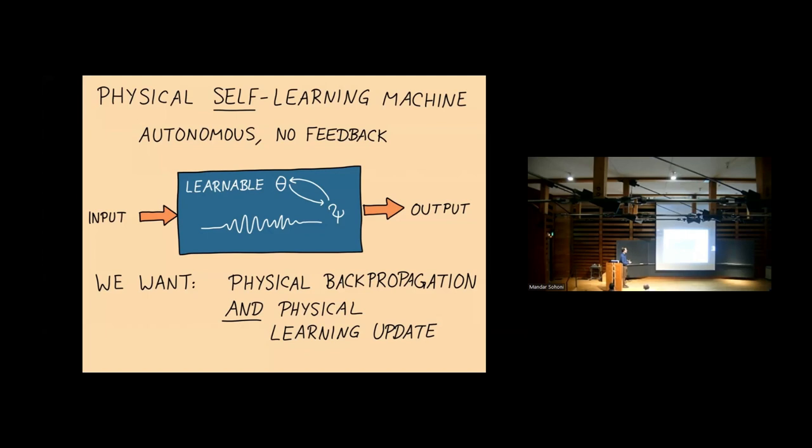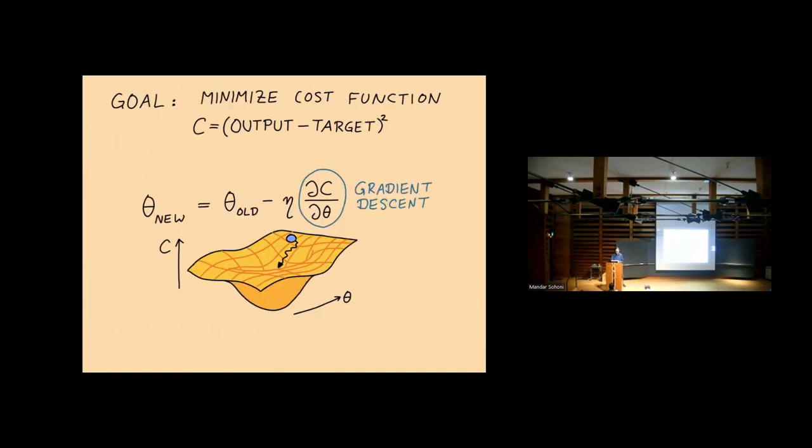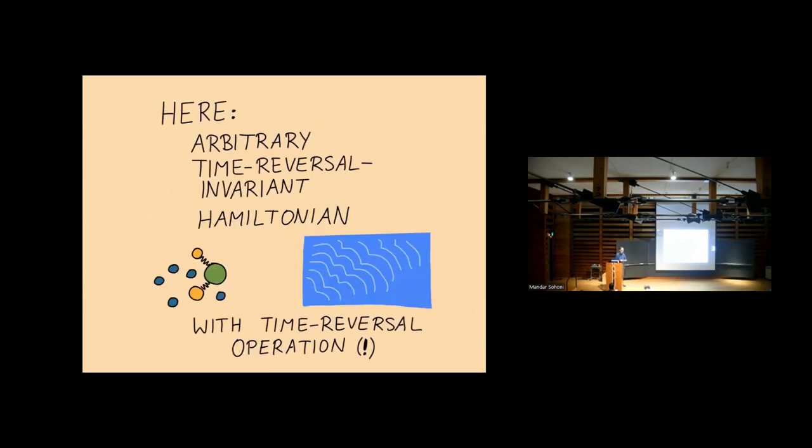That brings us to the question I want to answer in the following, namely, can we have an equally general way of doing physical backpropagation and at the same time also produce physical updates of the trainable parameters in a purely physical way, so by the physical dynamics of the system? So that's the question we set out to answer. We have our black box physical system, degrees of freedom that have their own dynamics, theta and psi, let's say two coupled wave fields. We want some approach to get both physical backpropagation with its efficiency and a physical learning update of the trainable degrees of freedom.